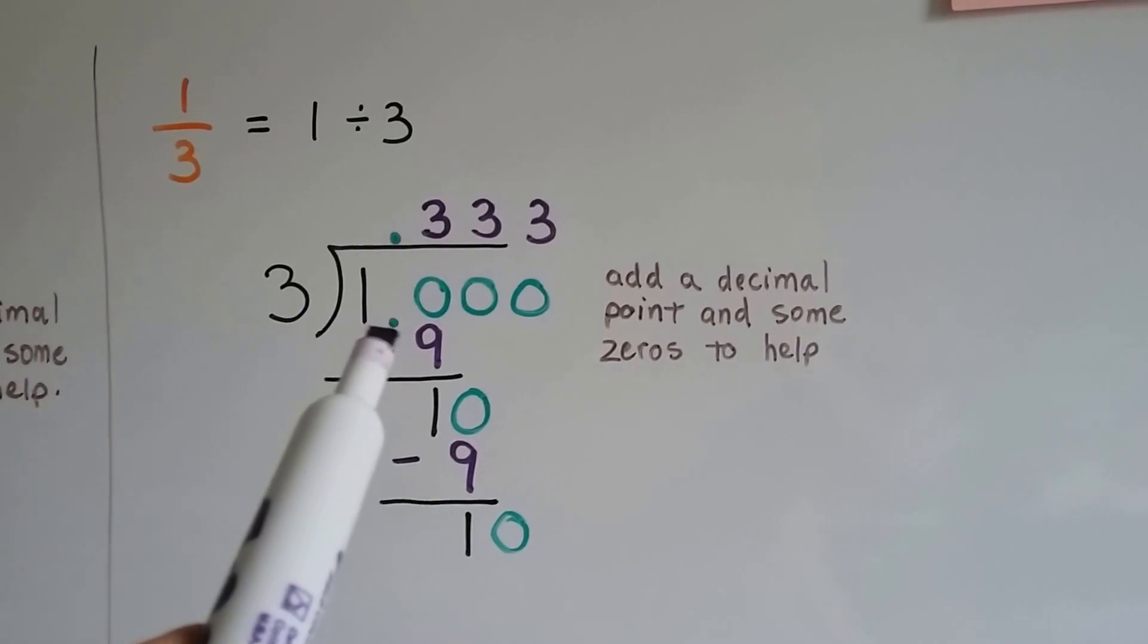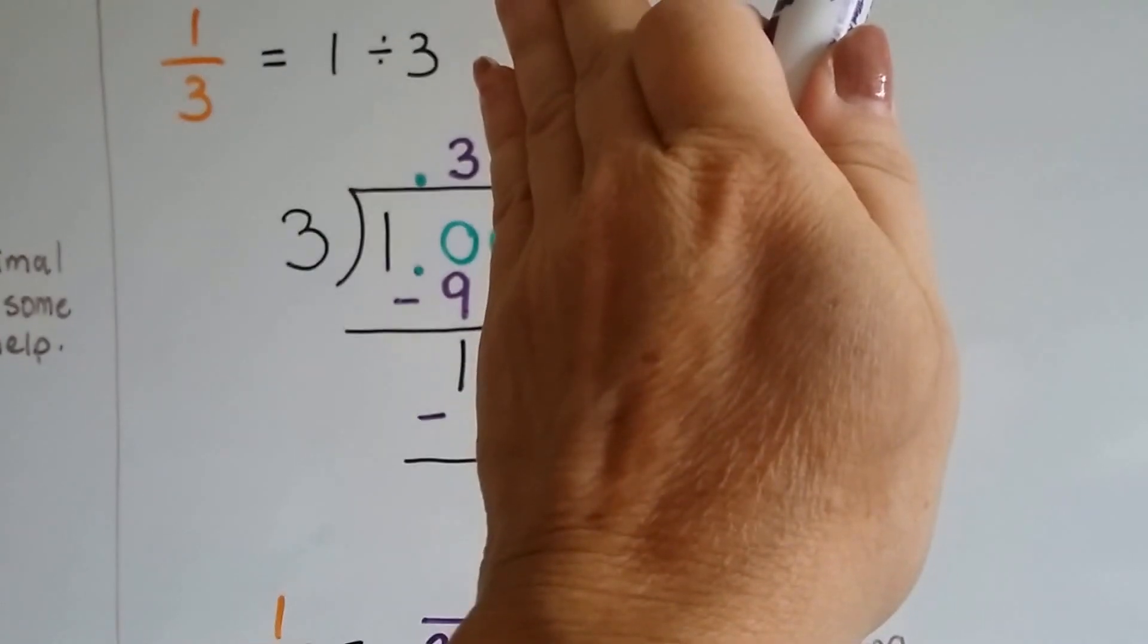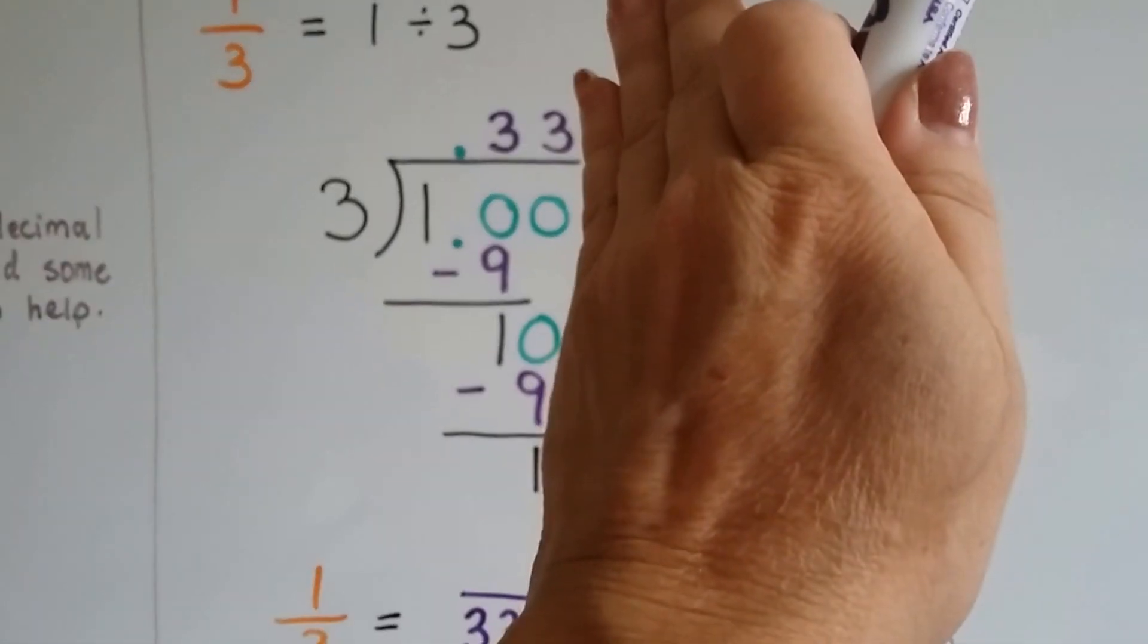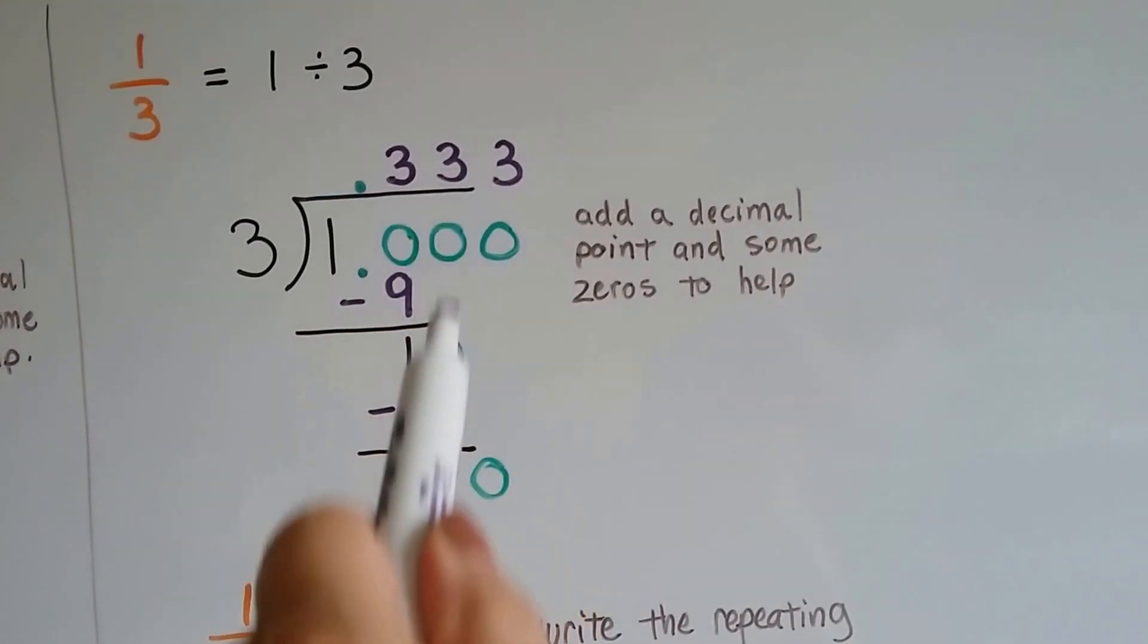We have to add a decimal point and some zeros to help us. 3 goes into 10 three times. 3 times 3 is 9. We do our subtraction and get 1 left over. Now it's that zero's turn to drop down, and 3 goes into this 10 three times, and we put it over the 0 we drop down.